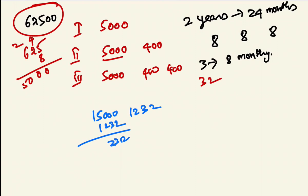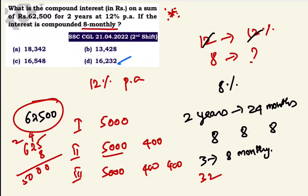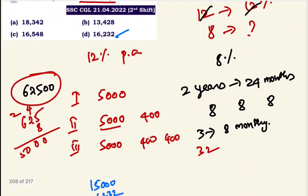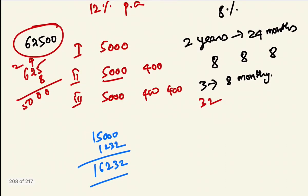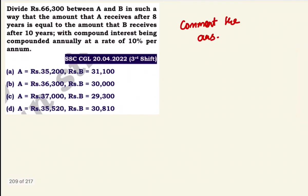Total compound interest is Rs.16,232. This is called compound interest for 8-monthly compounding. Option D is the answer. Main concept: rate of interest for 8-monthly is adjusted accordingly. In the next video we will see more questions. Thank you.